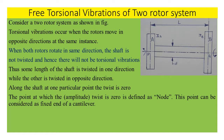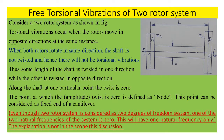The point at which the twist — that is, amplitude — is zero is defined as the node. This point can be considered as the fixed end of a cantilever. Even though the two-rotor system is a two-degree-of-freedom system, one of the two natural frequencies is zero, so it effectively has one natural frequency only.